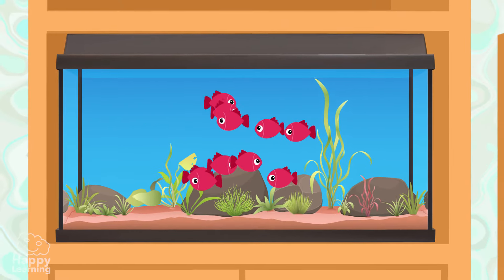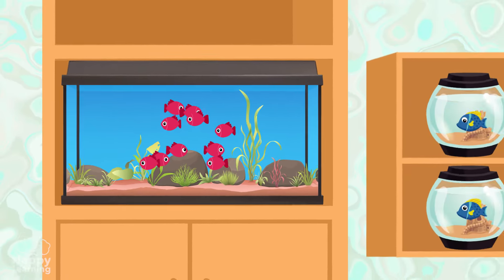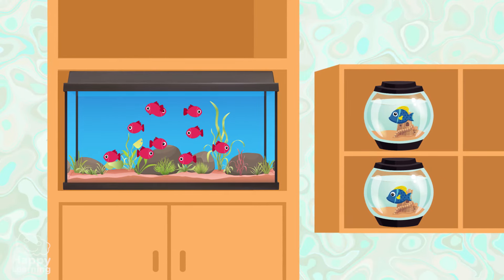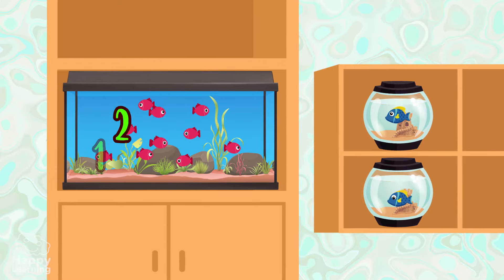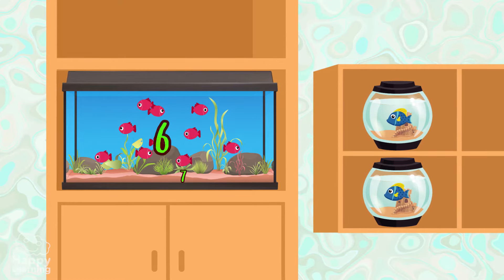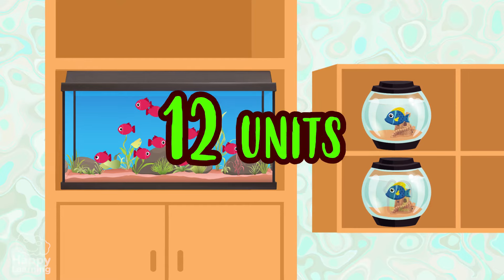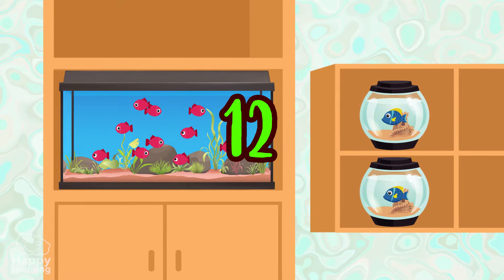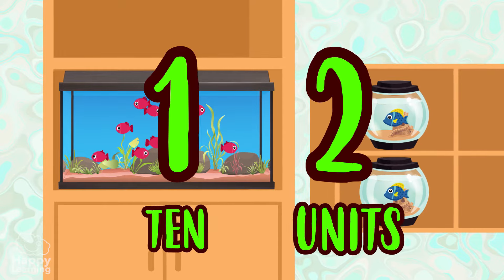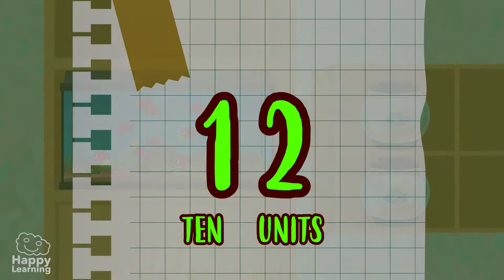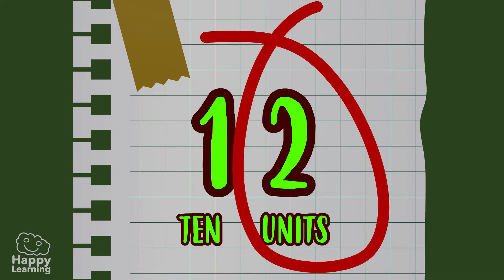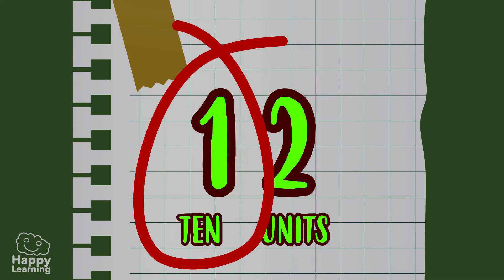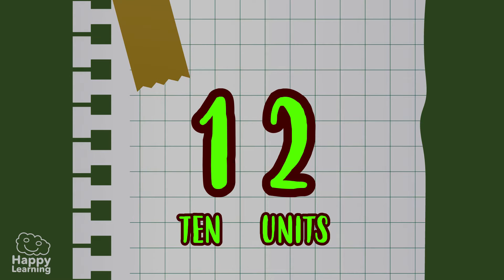Let's leave our fish tank here, because here come two more fish. If we count them all now, we'll have twelve units — twelve fish. Or in other words, a ten and an additional two units. I write it like this: the units in the first position starting from the right, and the tens in the second position, always starting from the right.